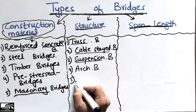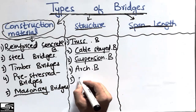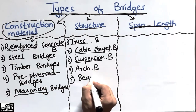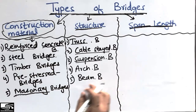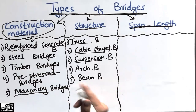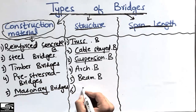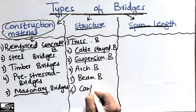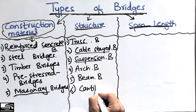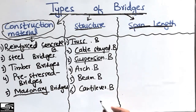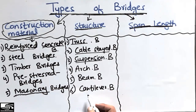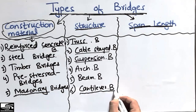The fifth one is the beam bridge, where simply a beam is used for the construction of bridges. The sixth one is the cantilever bridge — similar to a cantilever beam, the bridge is constructed using a cantilever configuration. We call this entire category structure bridges.